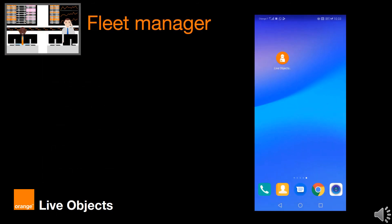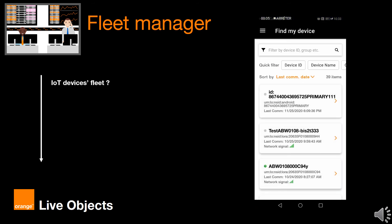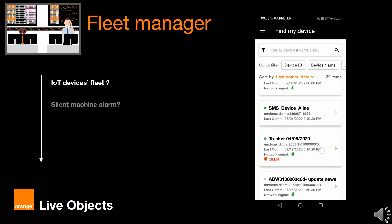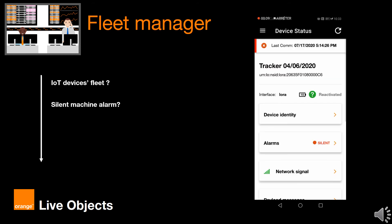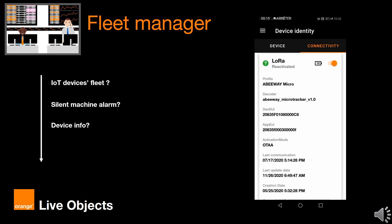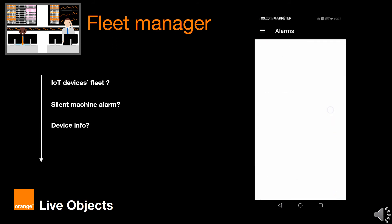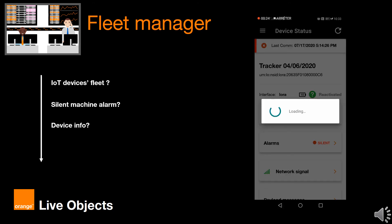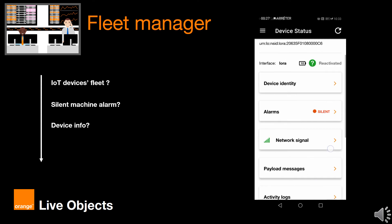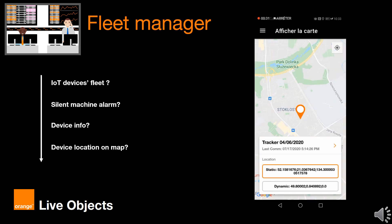What about if I were an IoT device fleet manager? I will surely need to access my device list, check if there are some alarms like a silent machine alert. If so, I can access the device info, show its connectivity, check the alarms, and show its location on the map as well.